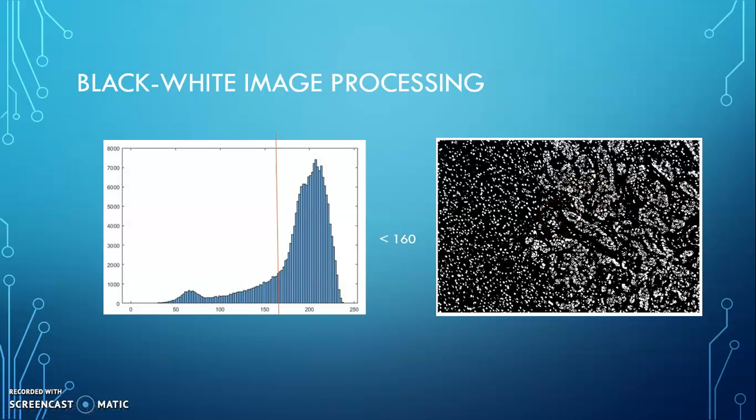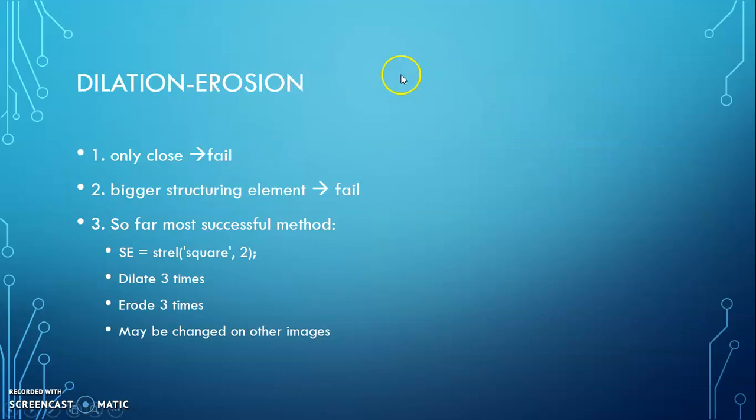So in order to prevent this, I want to apply the close first. And I tried that if I only use the close algorithm dilation and then erosion, it failed because nothing changed. Even though I changed the structuring element size, it failed. Also, if I use a bigger structuring element, for example three by three, it's also failed because everything will connect or disappear.